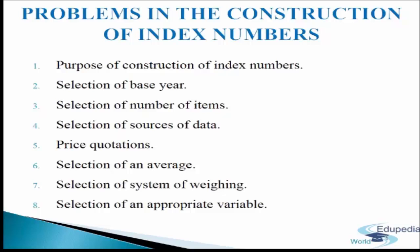The choice of method depends on the purpose of the index numbers. Problem 3: Selection of number of items. It refers to collection of data which should be determined by the purpose for which the index is constructed. It is not feasible to include all commodities. It is essential to decide which commodities are to be included. The data from unrelated commodities or periods should not be grouped together. Commodities should be representative of the group. The number of commodities should be neither too large nor too small — large for a general price index and small for a specific price index. Only standardized or graded items should be included.